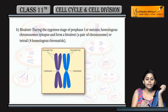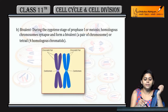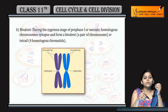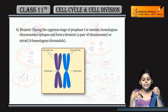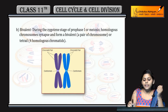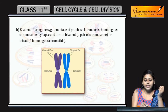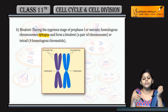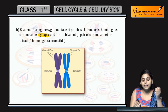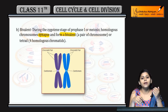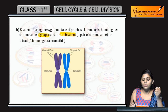Next is Bivalent. When homologous chromosomes are paired with synapses, what is formed is called a Bivalent.